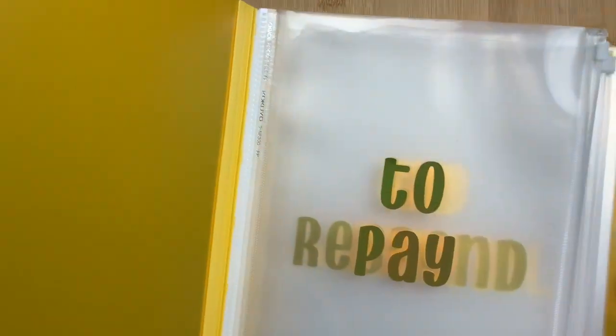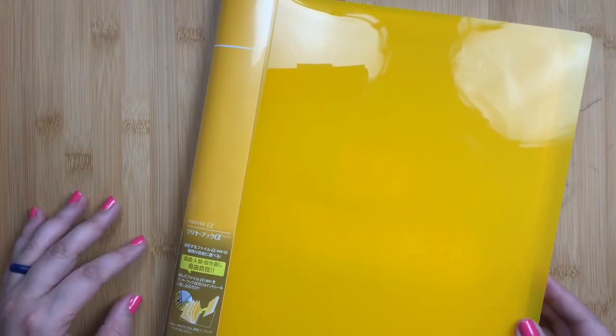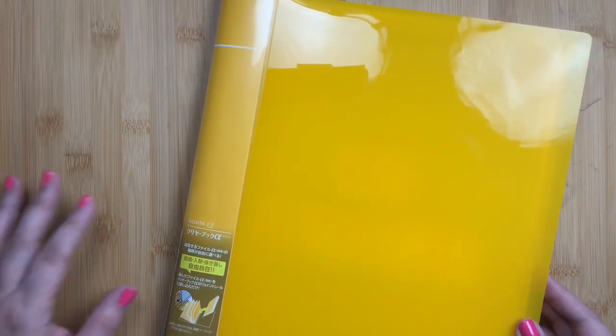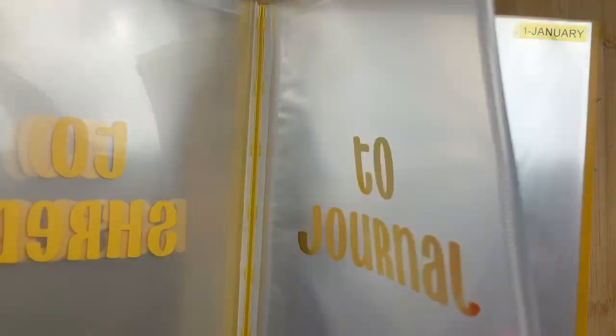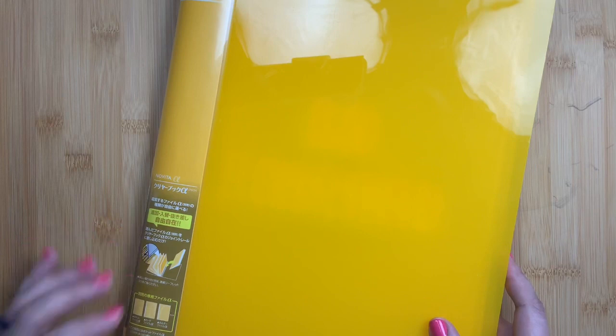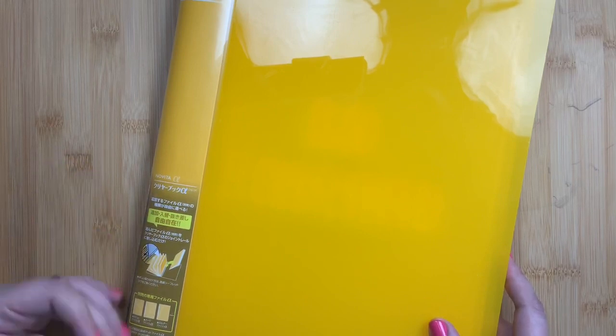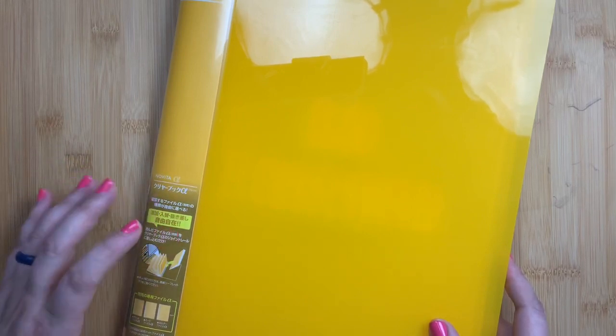When I get my mail every day, the first thing I always do is just throw away the junk, the stuff that doesn't matter, that doesn't need to be shred, that doesn't need to be addressed. Then I can quickly unzip and just stick the other items into whichever section they need to go into. And then once a week, or you can do it more frequently or less frequently depending on what works for you, I can take this and process everything that's in it.